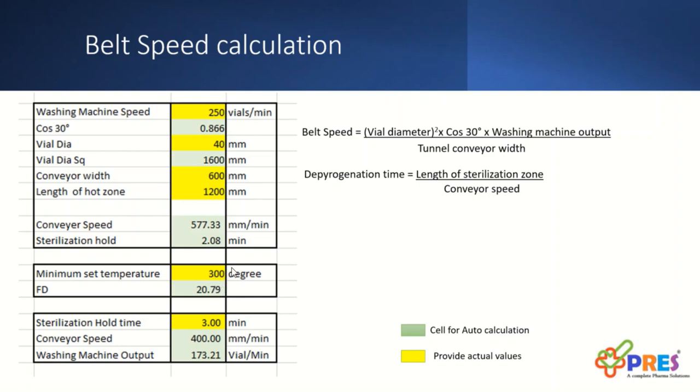During heat penetration study, whatever the minimum temperature you are going to get, you can consider here. Based on that you will be able to get the Fd. You can increase a little bit the set temperature. I think up to 320, 330 is fine. With less time we will be able to achieve 3 log reduction of endotoxin based on that setting.